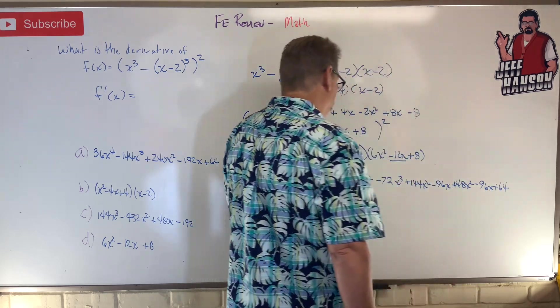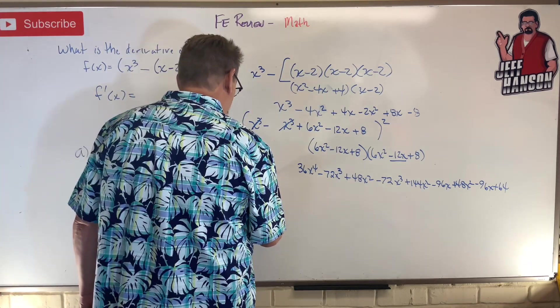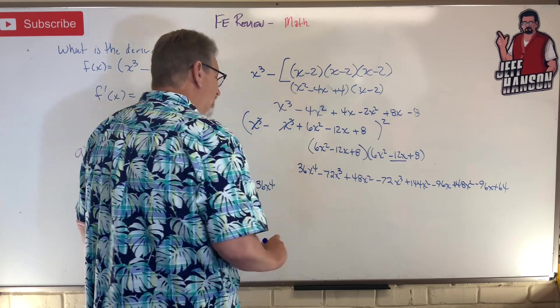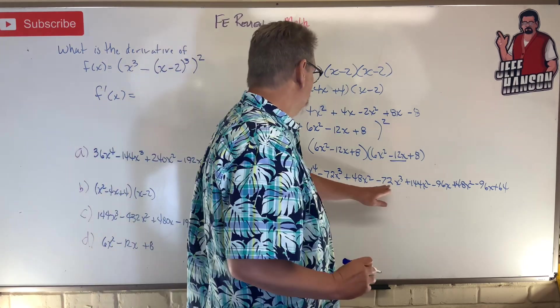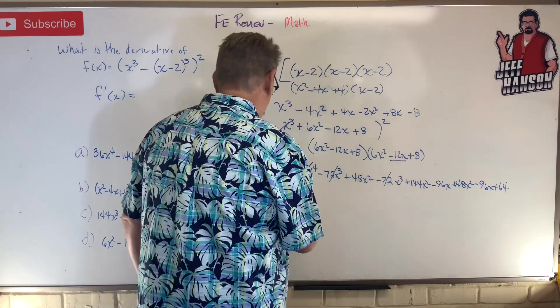This whole thing simplifies to 36x⁴. How many x³ do I have? I've got two of them. That's -144x³.